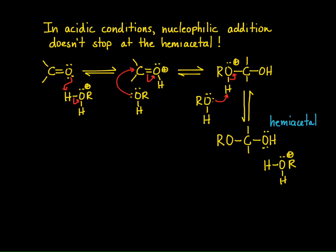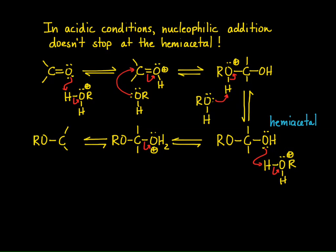In acidic conditions, that OH group can be protonated — and this is the key — because if it gets protonated, you now have water, and that water can easily come off. So a good leaving group is created and water leaves. When water comes off, a carbocation is generated. This carbocation can be stabilized through resonance: a pair of electrons from the oxygen donates into the carbon, generating a new resonance structure where the positive charge is on the oxygen. This is the major resonance contributor.